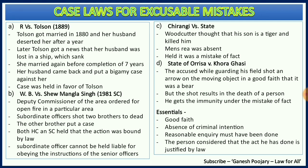The third case law is Chirangi v State. There was a father and son — the father was a woodcutter and both were in a forest. At some point, the father thought his son was a tiger and by mistake killed him. There was no mens rea available — he never had any intention of killing his own son. It was held that it was a mistake of fact: he mistook his son for a tiger, and he got immunity.